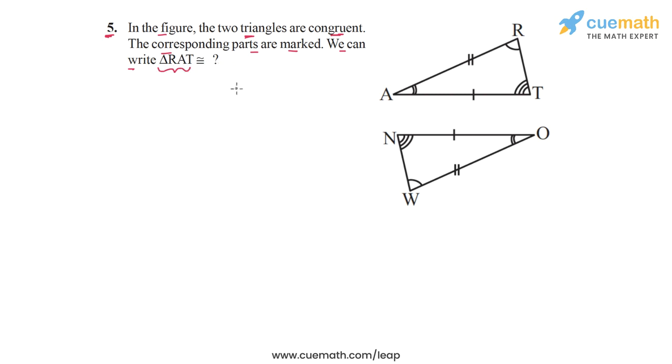So the two triangles are congruent, but we have to write this congruence relation. We have to complete this congruence relation by keeping in mind the correct order of the vertices. So the problem is that the two triangles are not in the same orientation. So we have to carefully observe which vertex in triangle RAT corresponds to which vertex in the second triangle.